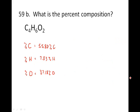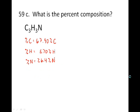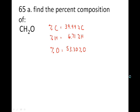Number 59B, there are the percent compositions. You've probably already checked those in the back of your book. 59C, and then I think the last problem, find the percent composition of CH2O. That comes out to 39.99% carbon, 6.71% hydrogen, and 53.30% oxygen.